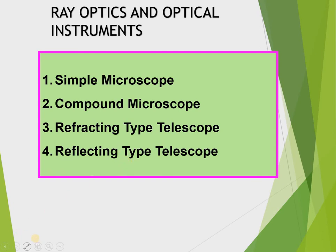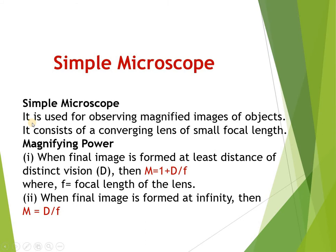First is the simple microscope. You have all seen it — it is just a magnifying glass, a convex lens of short focal length. The shorter the focal length, the greater the magnifying power. When the final image forms at the least distance of distinct vision, the magnifying power is 1 plus D upon F.